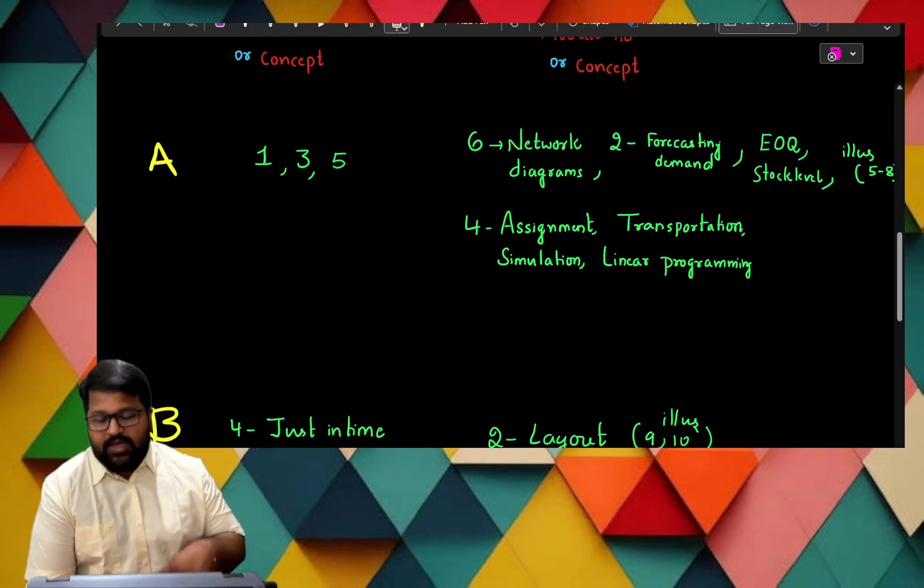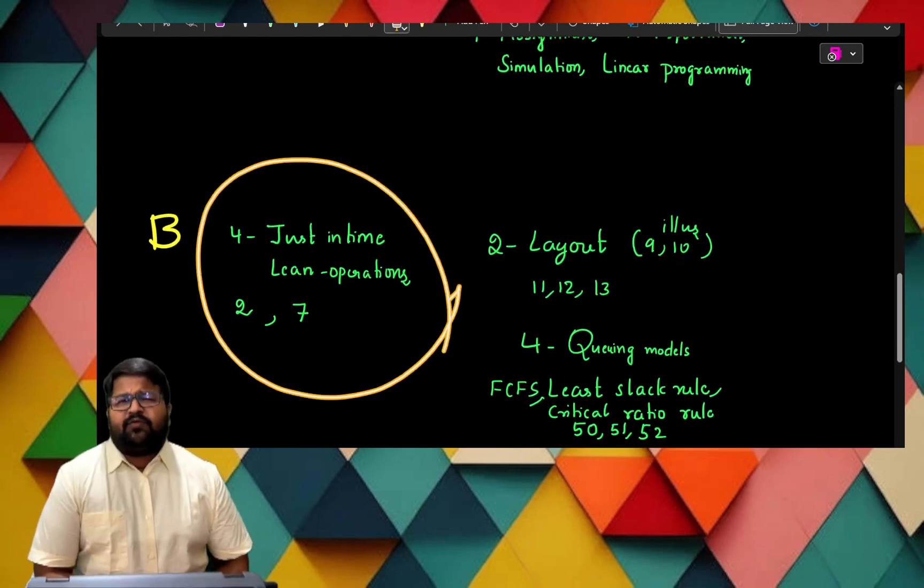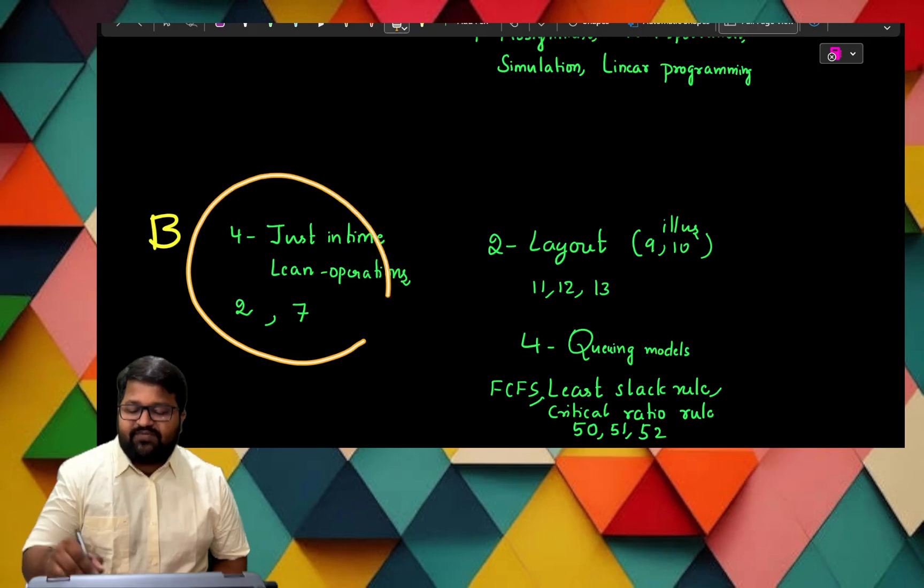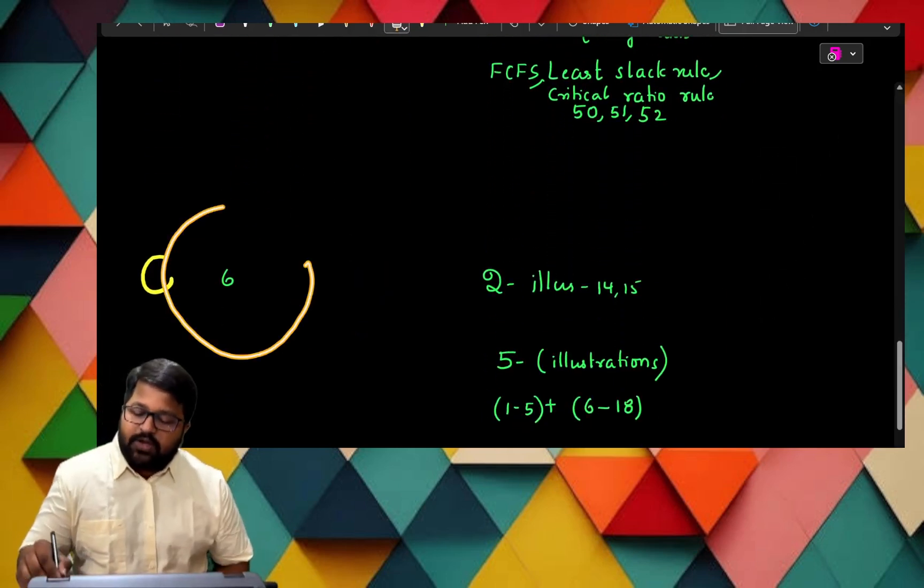Modules 2, 4, 7 will be B category. The C category is module number 6. This is the bifurcation of ABC analysis for the theory part.